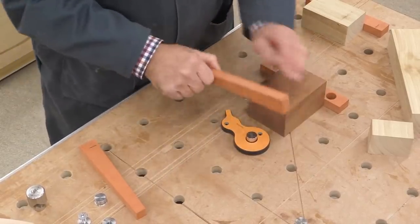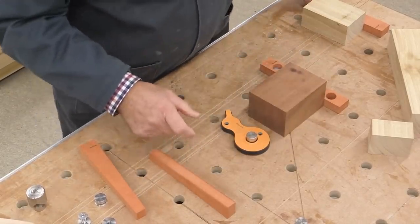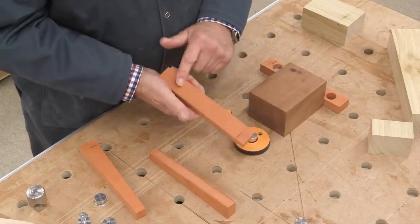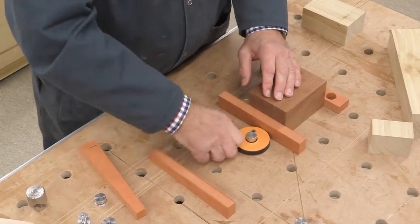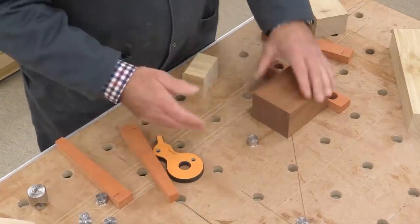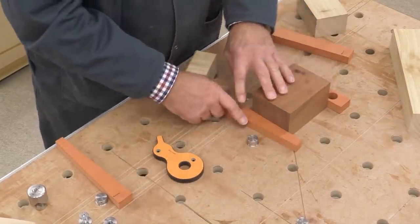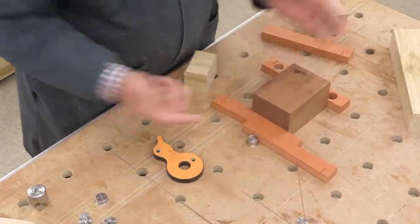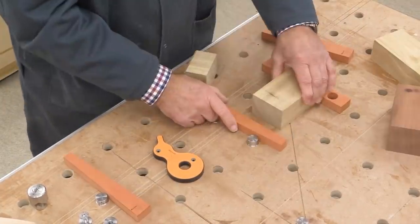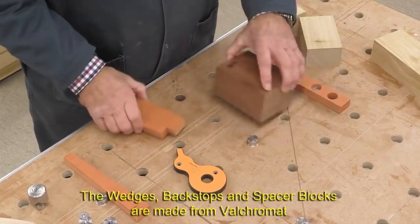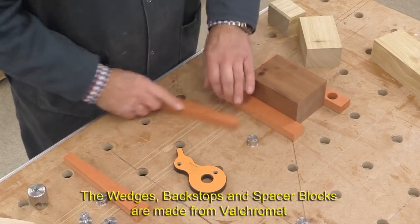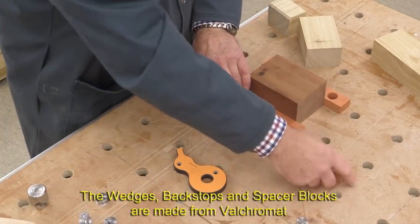There's also a spacer block, which has got no holes in it, and it can be used in any way like that way. Or we can go back to our wedges in a situation like that, use a spacer and a spacer and a pair of wedges.